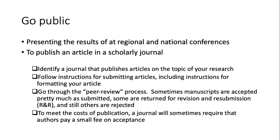After submitting to an academic journal, you go through the peer review process. Sometimes your report is accepted with only minor changes. Sometimes it is returned for revision and resubmission — this is called R&R — and you may go through two to three rounds of R&R. Other papers can simply be rejected; it happens. To meet the cost of publication, some journals require authors to pay a small fee upon acceptance.